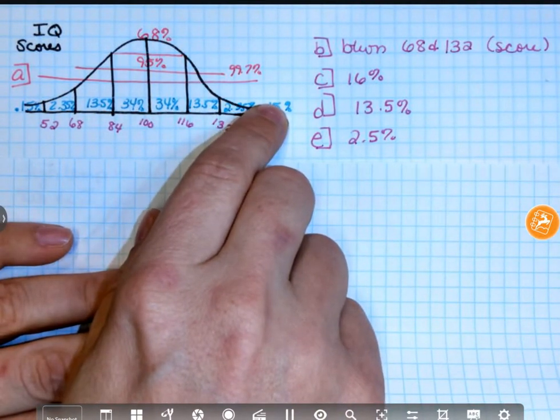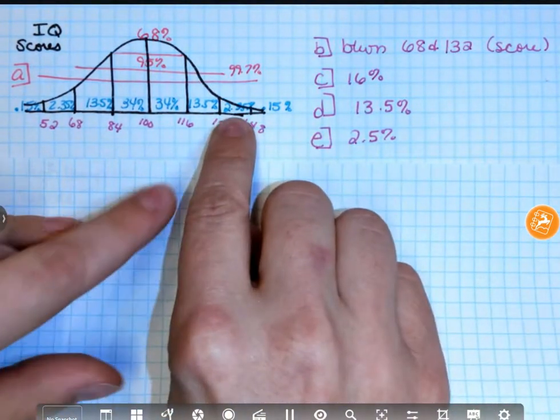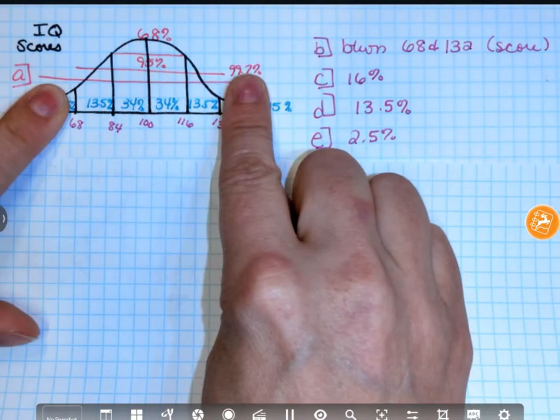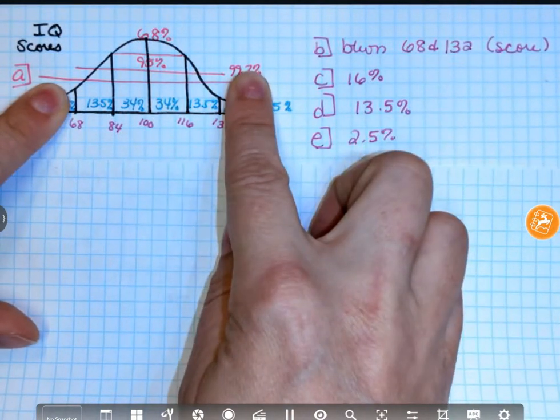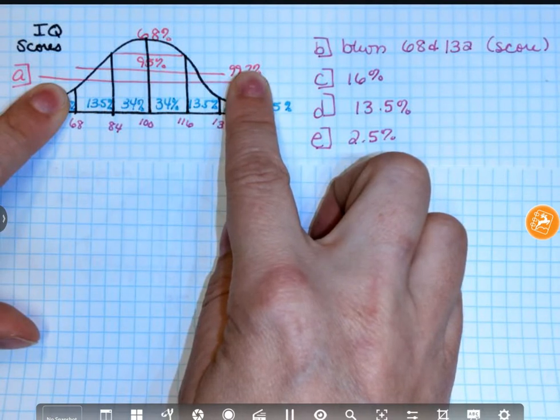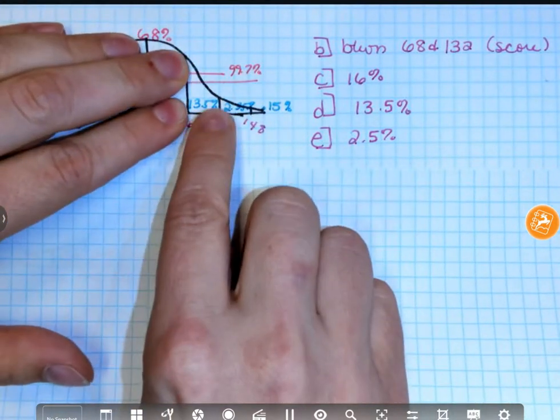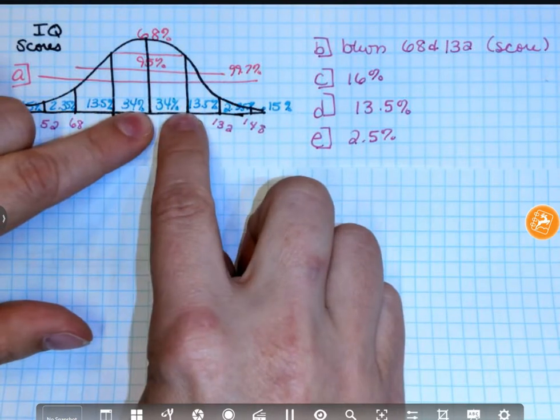And then you can choose to either do the 68, 95, or 99.7. I actually prefer to do these little percents, because I know I'm going to use them. So the question said, for B, what interval would you expect the central 95? That goes from here to here. So between 68 and 132. And I don't really have a label, so I just wrote score for context there. Part C, what percent of people should have IQ scores above 116? You can either do this, plus this, plus this. I did 50 plus 34.